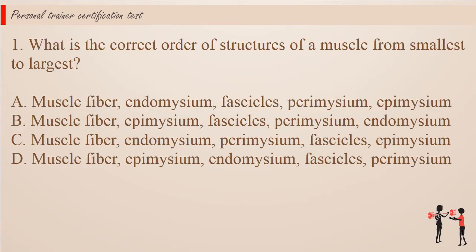What is the correct order of structures of a muscle from smallest to largest? a. Muscle fiber, endomysium, fascicles, perimysium, epimysium. b. Muscle fiber, epimysium, fascicles, perimysium, endomysium. c. Muscle fiber, endomysium, perimysium, fascicles, epimysium. d. Muscle fiber, epimysium, endomysium, fascicles, perimysium.